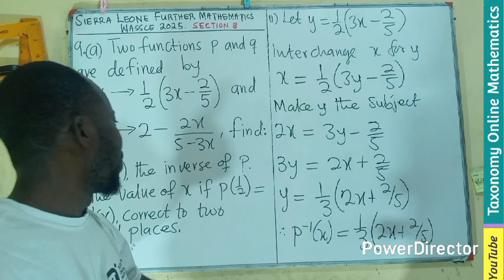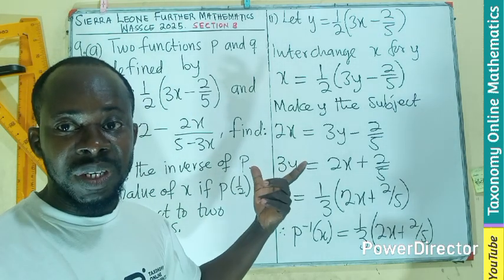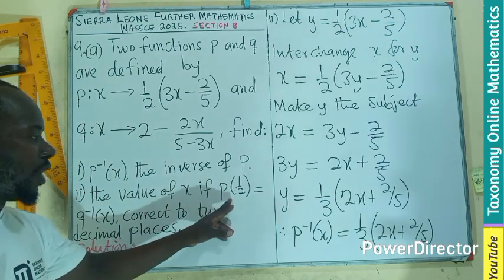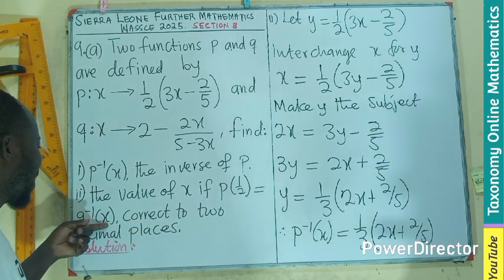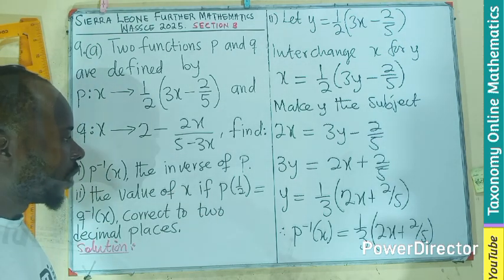Therefore, P prime, the inverse, will be equal to one-third times two X plus two-fifths. For the first part, which we are asked to find the inverse. So this is the inverse of the P function. The next thing to find is to find the P of half and find the inverse of Q.